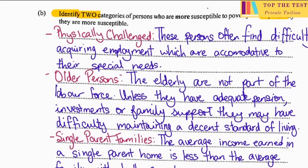I haven't gone fully into detail in the explanation because I wanted to give as many options as possible. The first category is physically challenged persons. These persons often find it difficult to gain employment accommodative to their special needs — for example, lack of wheelchair ramps or discrimination from prospective employers — making them more susceptible to poverty.